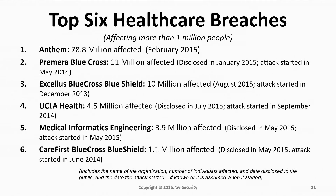This slide illustrates the top six healthcare breaches in the records, and these are breaches that all have affected at least 1 million or more patients. A couple of things to note: first, all six were reported in 2015. In addition, five out of the six breaches actually occurred somewhere before 2015 — in some cases, almost a year before they were detected or reported. This is very alarming: these are big breaches, and it takes a while to not only detect them but then to report them as well.